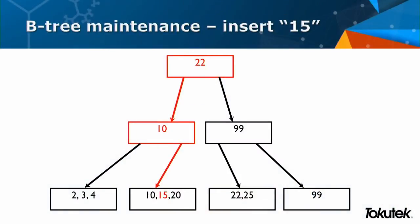Another B-tree primitive is inserting data. If I want to insert the key-value pair with a key of 15, I'm going to find the leaf node it belongs in. I go to the left of 22, to the right of 10. I end up in that leaf node and I store 15 between 10 and 20 for easy lookup.